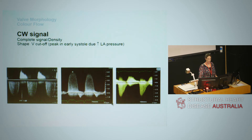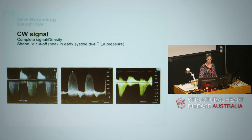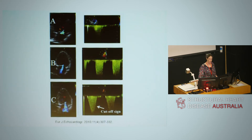Moving on to continuous wave Doppler: as mitral regurgitation becomes more severe, the signal becomes denser and more complete. In moderately severe mitral regurgitation, the signal is dense, and in severe regurgitation we have the characteristic V cutoff shape because of the rapid rise in left atrial pressure. To summarise: from mild to severe MR, we have increasing jet size within the left atrium and an increasingly dense continuous wave signal until we get the V cutoff sign.